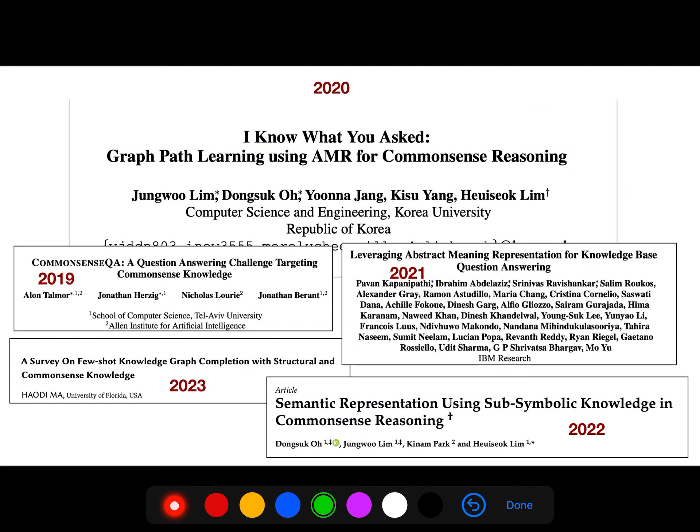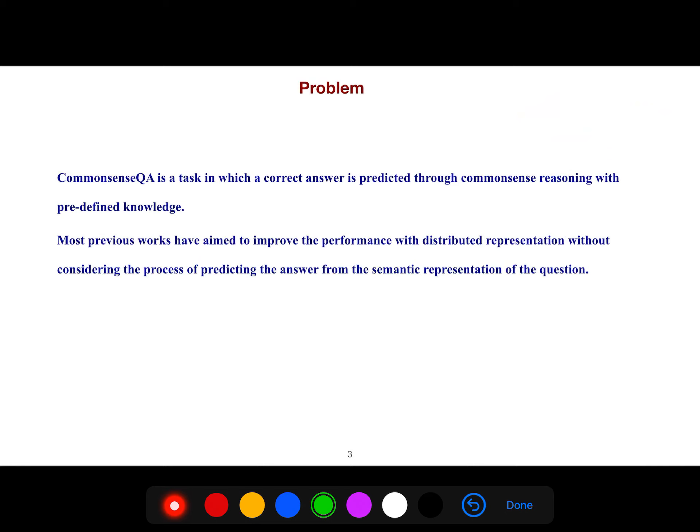I want to explain this article from Korea University, an excellent article for application of abstract meaning. We want to extend our AMR graph to cover the concepts of ConceptNet. The problem is that commonsense question answering is a task in which a correct answer is predicted through commonsense reasoning with predefined knowledge, but most previous works have aimed to improve the performance with distributed representation without considering the process of predicting the answer from semantic representation of the question.